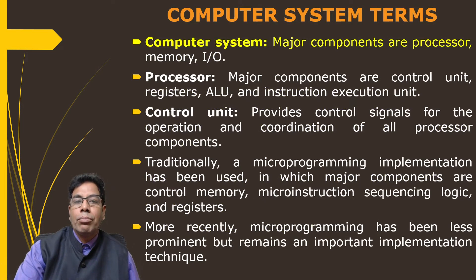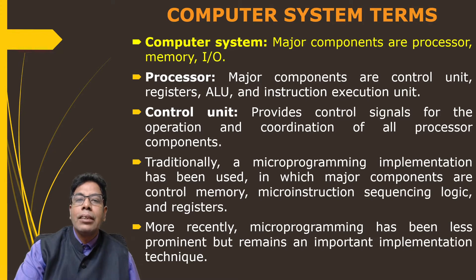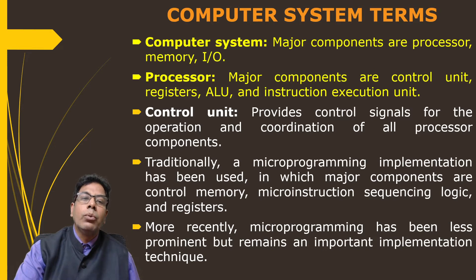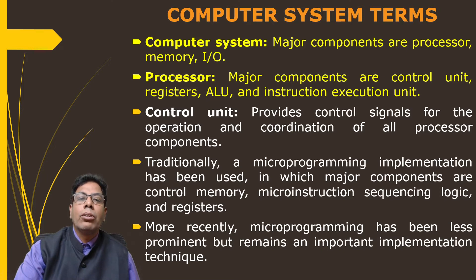The first term is computer system. The computer system consists of processor, memory, and input/output. The processor is the central processing unit. In the case of microcomputers, the CPU is a microprocessor, whereas in other systems it may not be. The processor has the control unit, a set of registers, the arithmetic and logic unit (ALU), and the instruction execution unit, which may have the instruction register and instruction decoder for execution of the instruction.